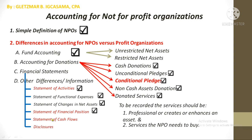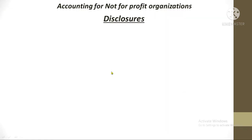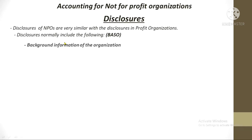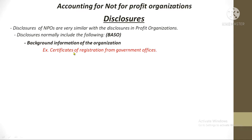Now let's go to NPO disclosures. Same as with the cash flow statement, NPOs follow the same principles as for-profit organizations for disclosures, but there are additional disclosures unique to not-for-profit organizations. Disclosures normally include items summarized by the mnemonic BASSO.